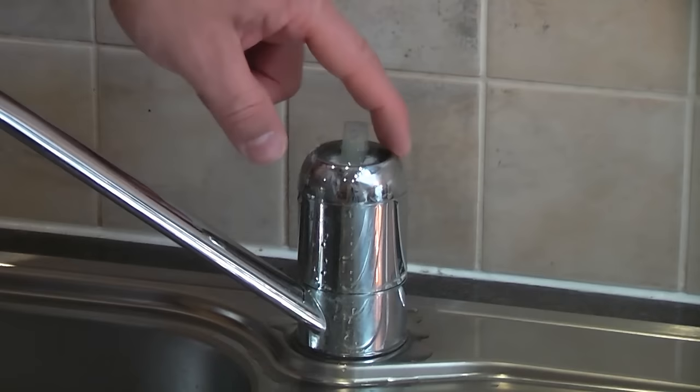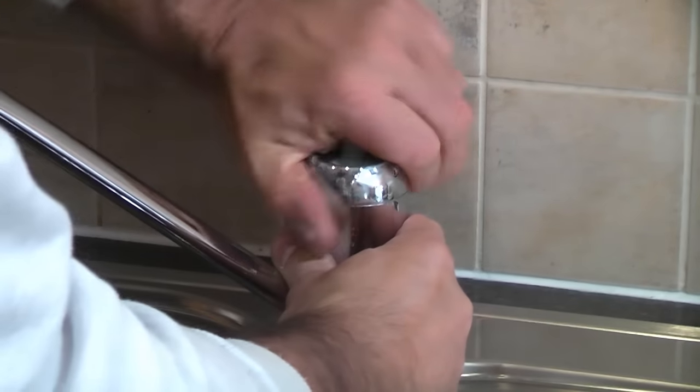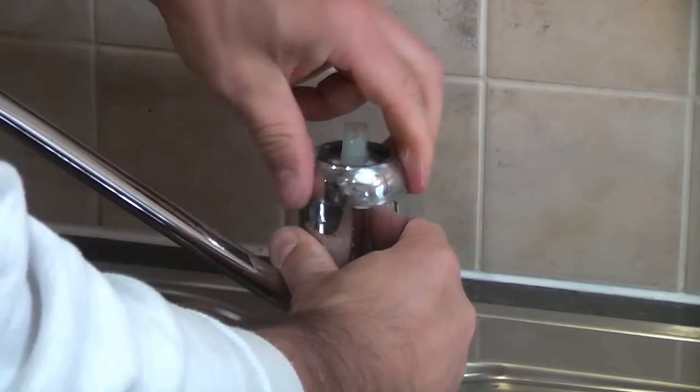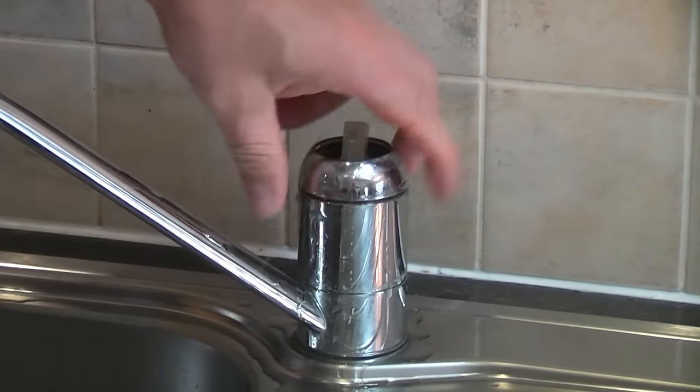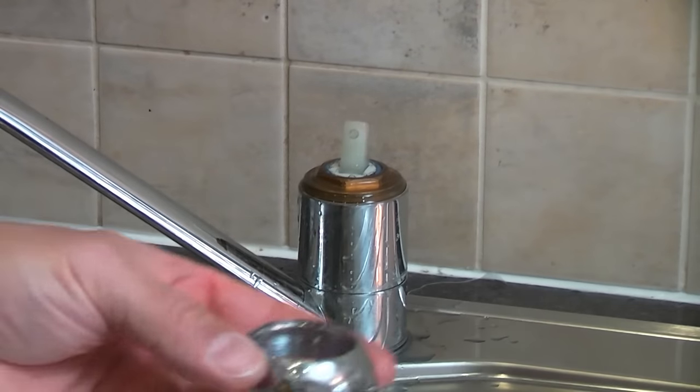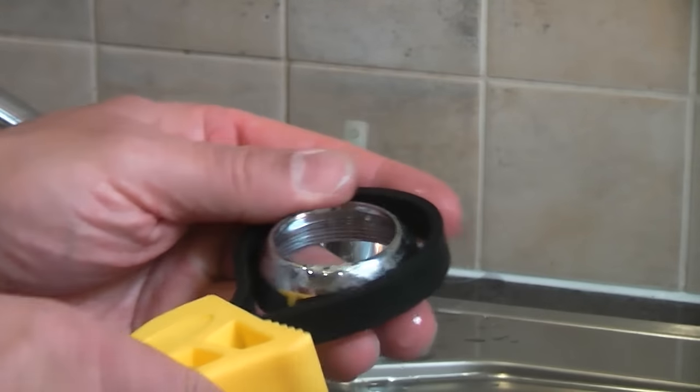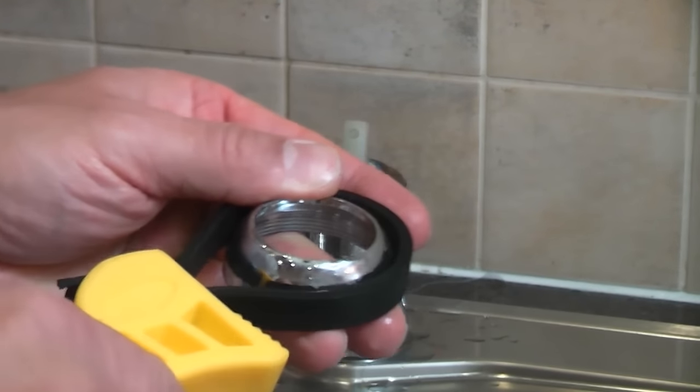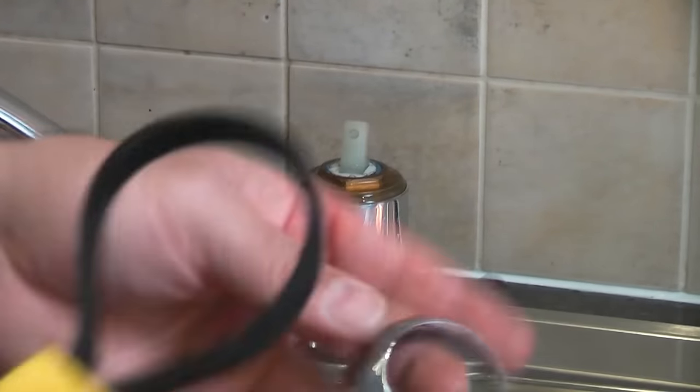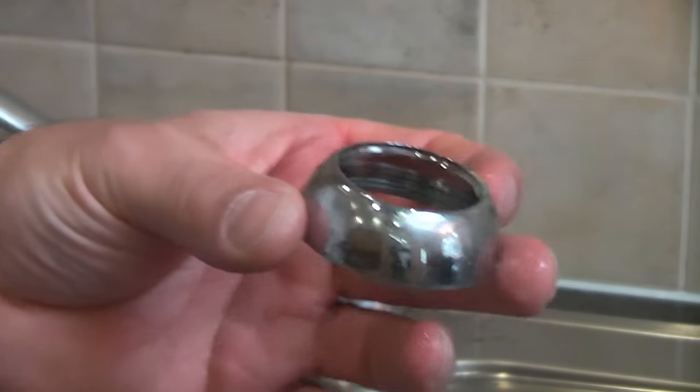We now need to undo this shroud. Sometimes you can get them by hand and other times you can't and you need to use some kind of tool. My favorite tool for undoing these is the strap wrench. You can put that on there, tighten it up, and you can use that to undo that shroud without actually damaging it at all.